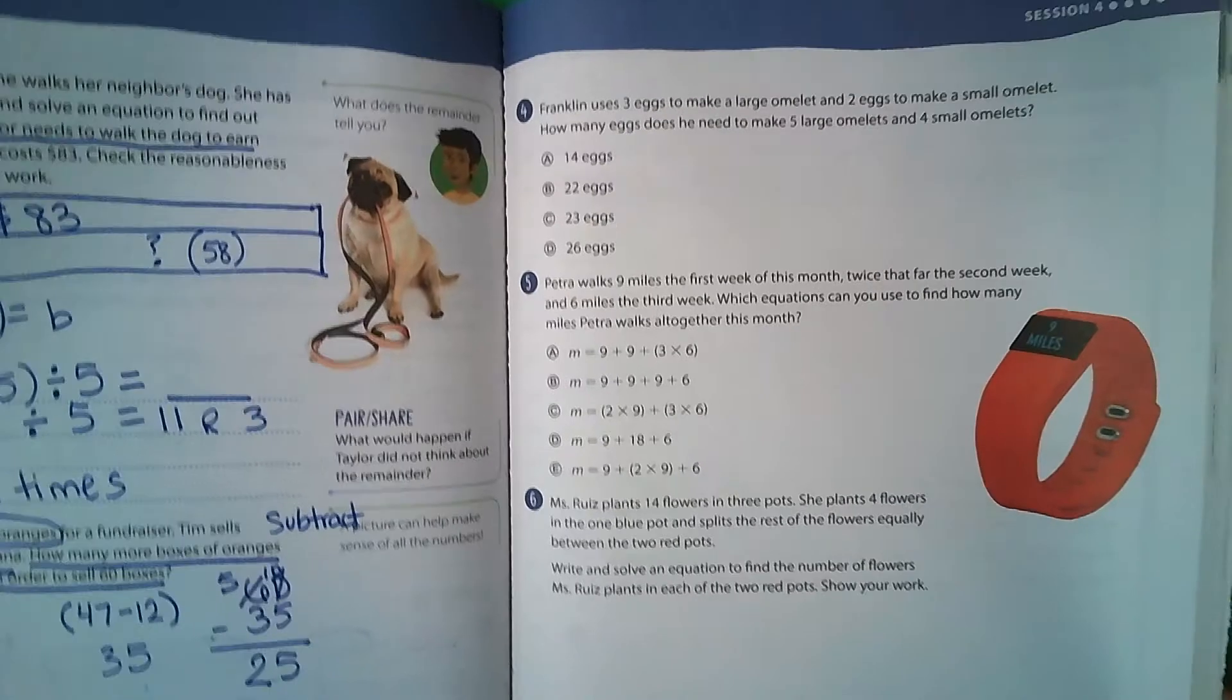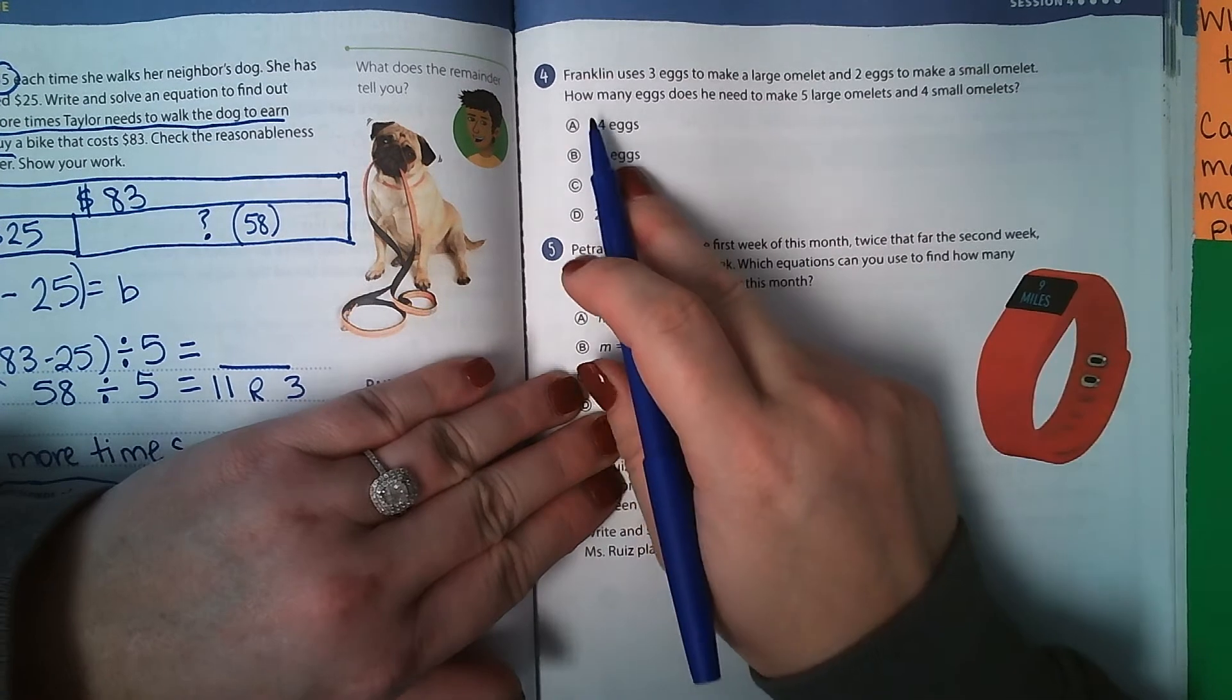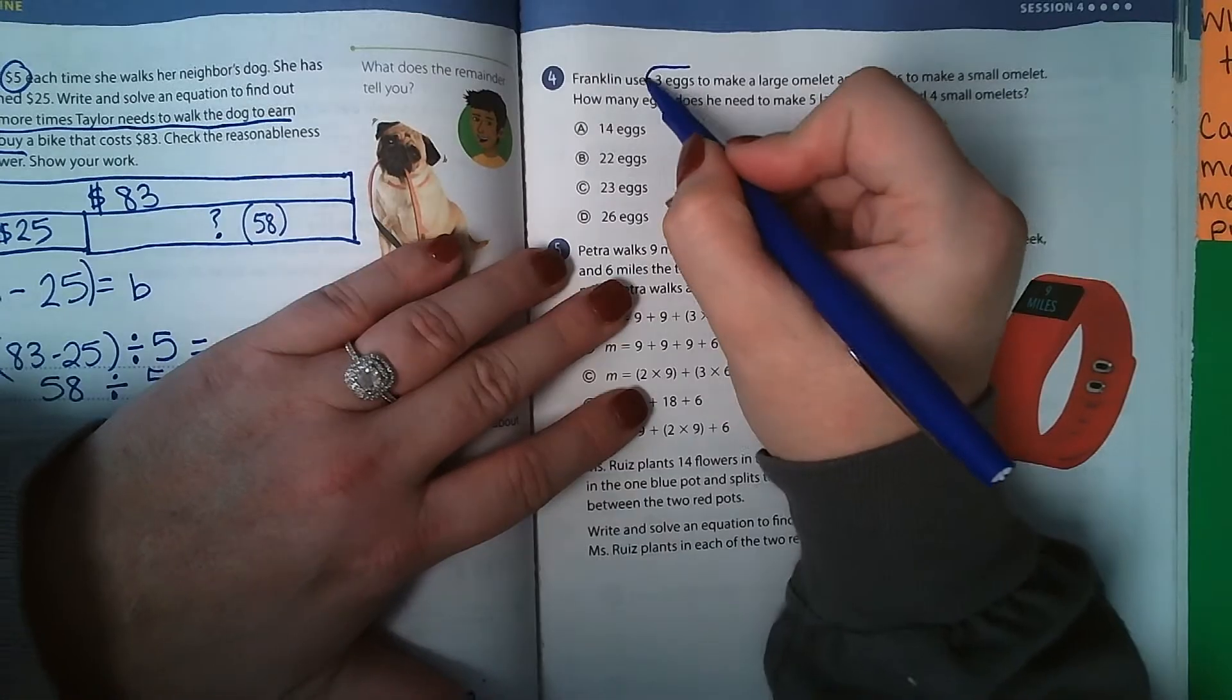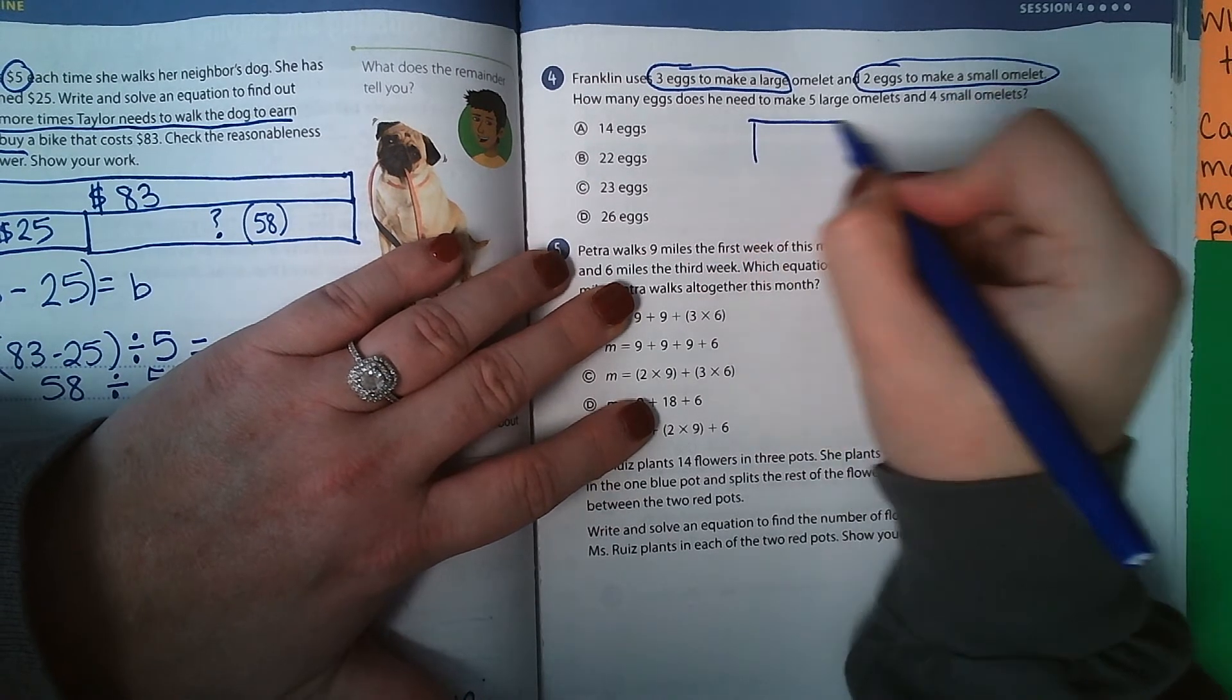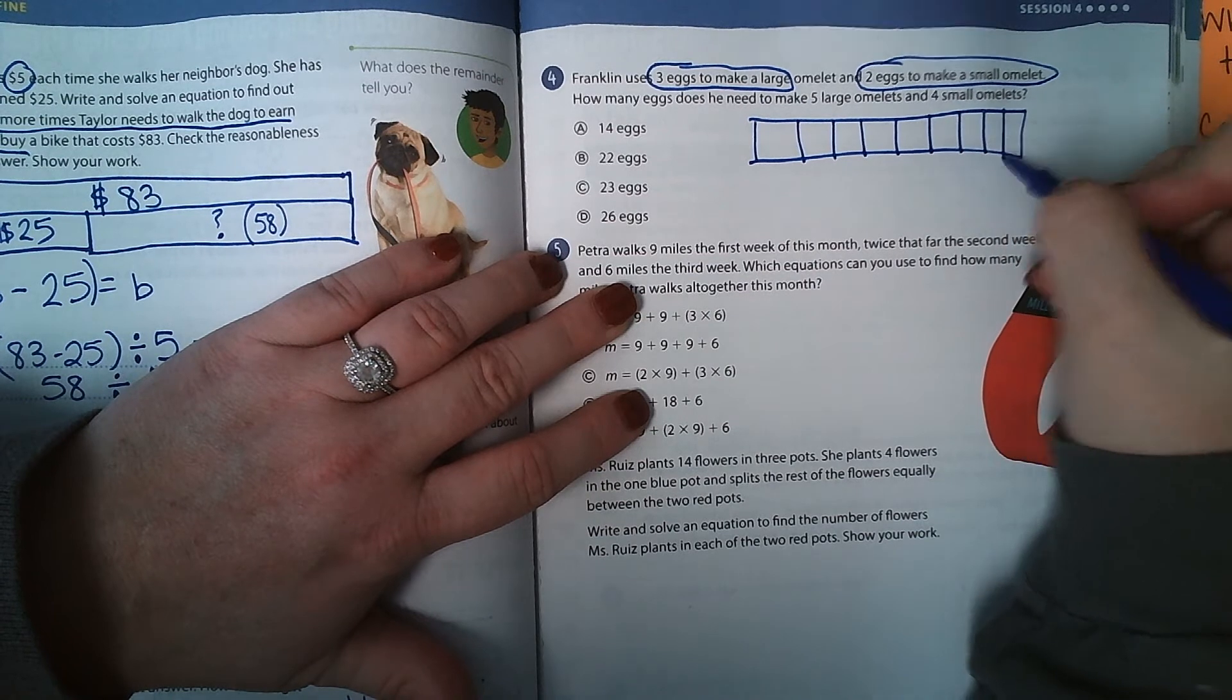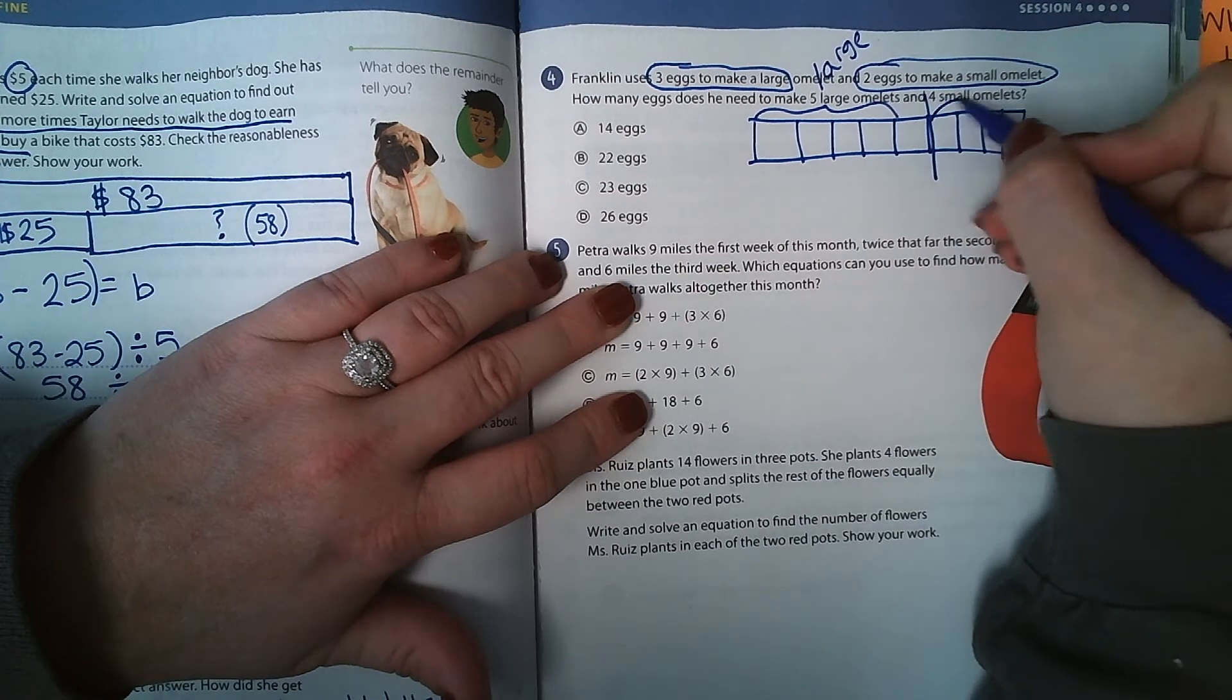On page 211, we're at the top for number 4. Franklin uses 3 eggs to make a large omelet and 2 eggs to make a small omelet. How many eggs does he need to make 5 large omelets and 4 small omelets? So he needs 3 eggs for a large, 2 eggs for a small. He has 5 large, so 1, 2, 3, 4, 5, and 4 small. 1, 2, 3, 4. 1, 2, 3, 4, 2, 3, 5. So this is the cutoff. So this is the large, and these are the smalls.